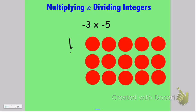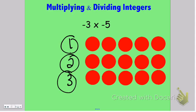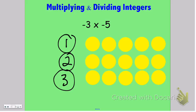So first I have made one, three groups of negative five, and then I need to take the opposite of that. So when I take the opposite these all turn yellow, so now I have 15 positives.